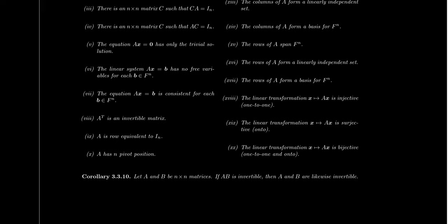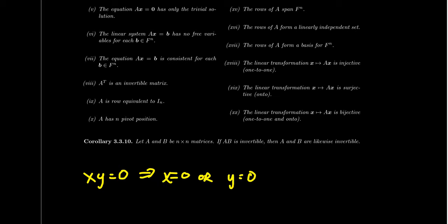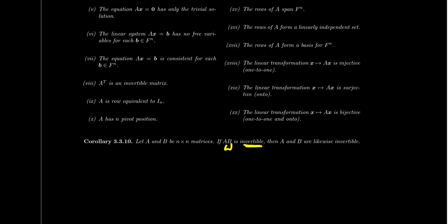Now, some consequences of the non-singular matrix theorem. A corollary that's quite interesting: if you have a product of two matrices that's non-singular, then the two factors have to be non-singular themselves. This is a weaker version of the zero product property. With numbers, if x times y equals zero, that implies x equals zero or y equals zero. We can't do that for matrices, because you can have a product of singular matrices that gives you zero even though they're non-zero themselves. But if a product of two matrices is invertible, then the two factors have to be invertible as well.